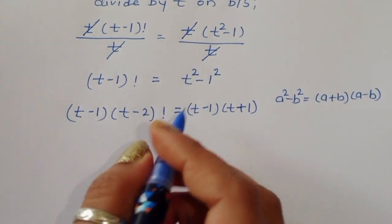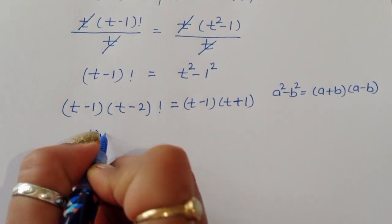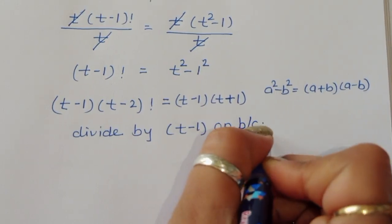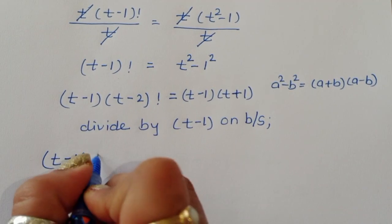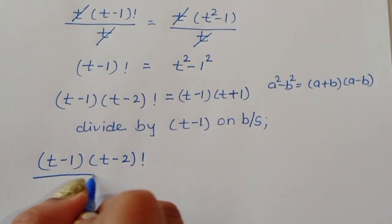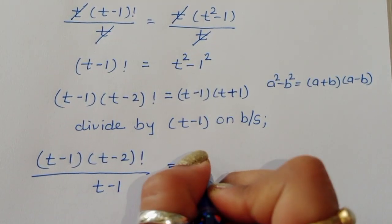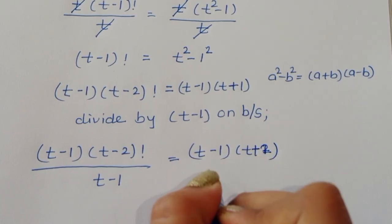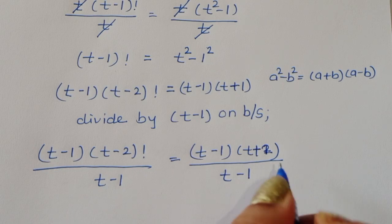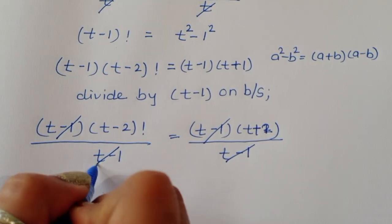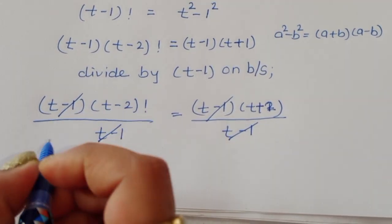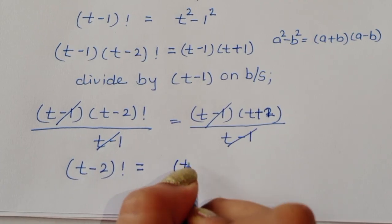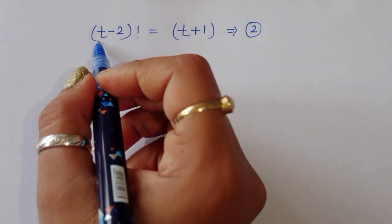We divide both sides by (t minus 1). The (t minus 1) cancels on both sides, leaving: (t minus 2) factorial is equal to t plus 1. This gives us equation number 2.